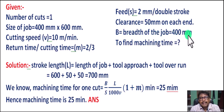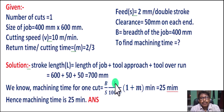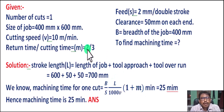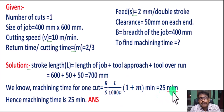Substituting values: B (width of job) = 400 mm, S (feed) = 2 mm per double stroke, L (total stroke length) = 700 mm, V (cutting speed) = 10 meter per minute, and M = 2/3 (return time to cutting time ratio). By calculating, we get 25 minutes. Hence, machining time is 25 minutes.